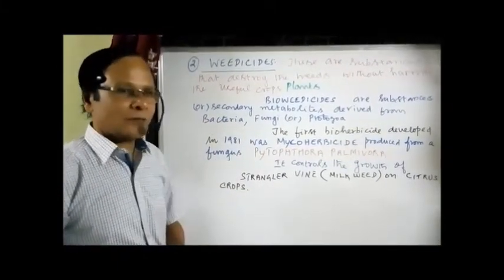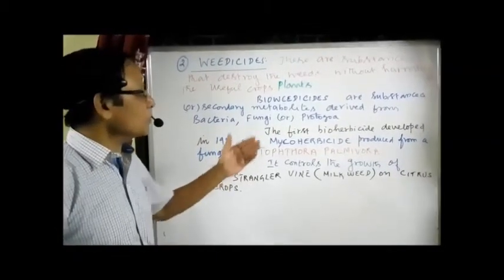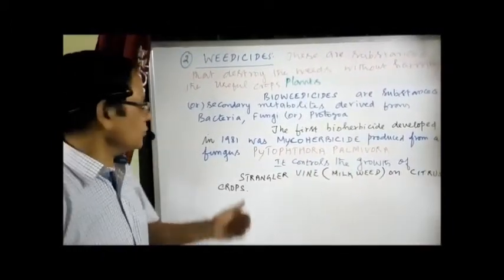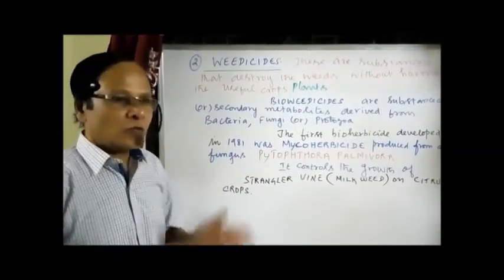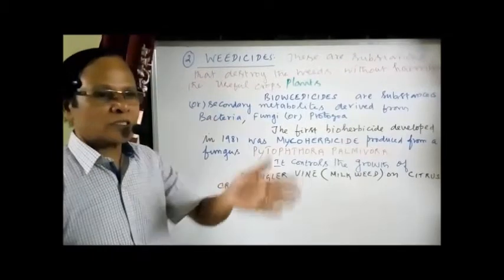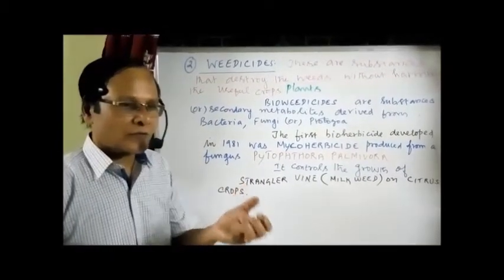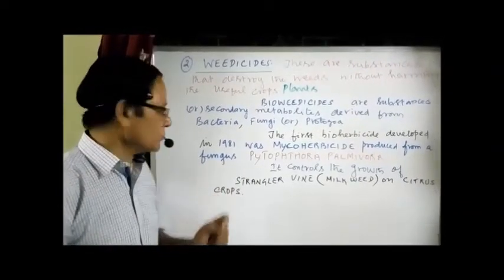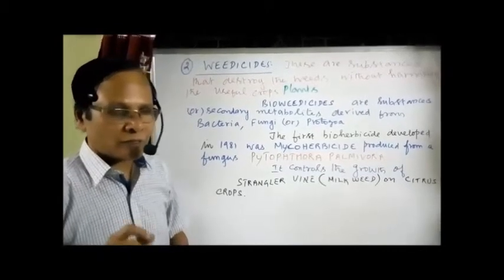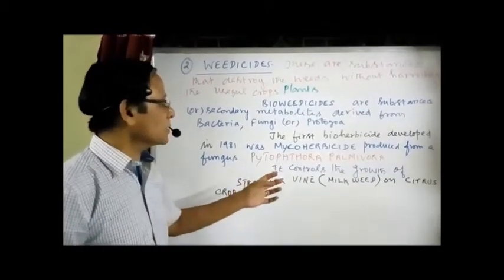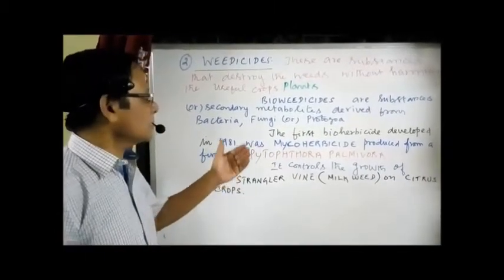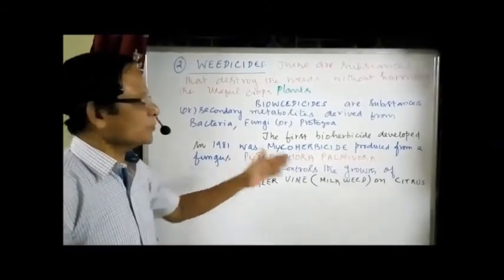The first bio-herbicide was developed in 1981. It was a myco-herbicide produced from a fungus called Phytophthora palmivora. Its role is to control the growth of strangler vine — a kind of milkweed growing on the trunks of citrus plants, affecting their growth. This weedicide is used to kill the strangler vine growing on citrus tree trunks. It is called a myco-herbicide because it is obtained from a fungus.